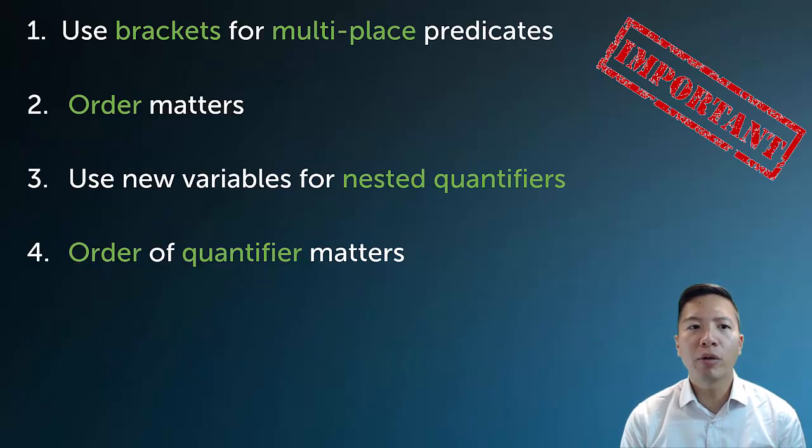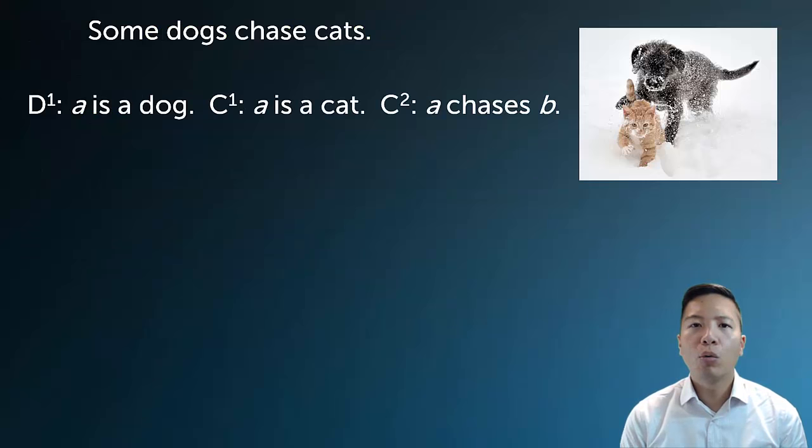So some general tips then that we've learned. Remember to use multi-place predicates with brackets and also remember that order matters. Typically, we will always invoke new variables for nested quantifiers and order of the quantifier really matters and it will disambiguate sentences for us. We're now able to symbolize some more complicated statements and we'll build up slowly over the rest of this video and video part two, our stock of symbolizations that we can do.